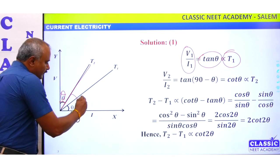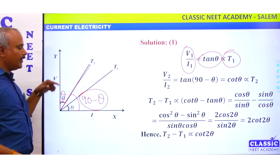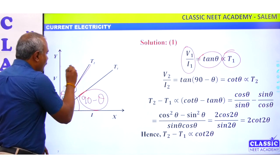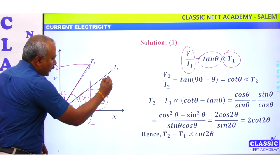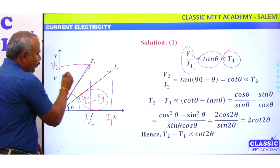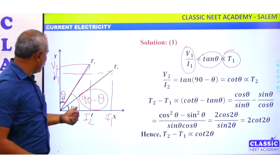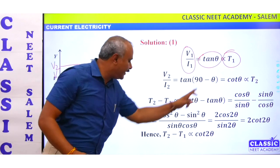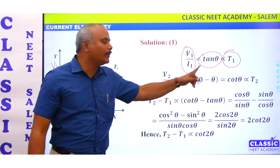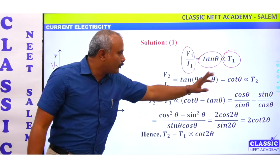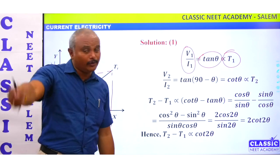We look at the second slope. Theta is the angle here, but for the second graph this angle is 90 minus theta. In the second graph, V2 by I2 — looking at this, V1 and I1 for the first. Then V2 by I2 equals tan(90 minus theta). Tan(90 minus theta) equals cot theta, and that equals T2. Then T1 is resistance R1, proportional to temperature.